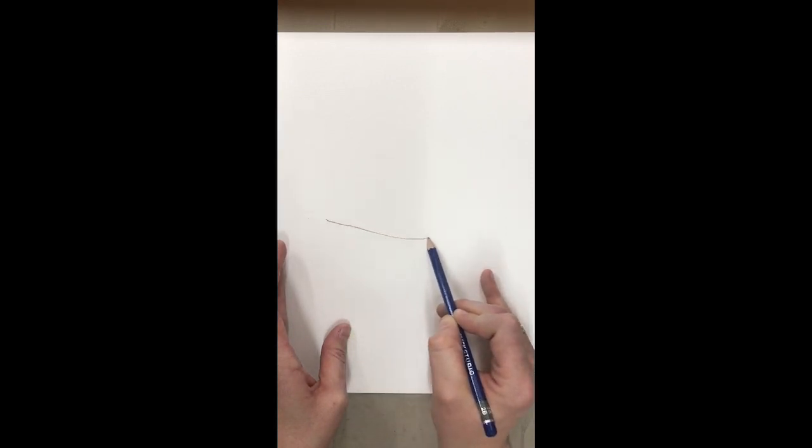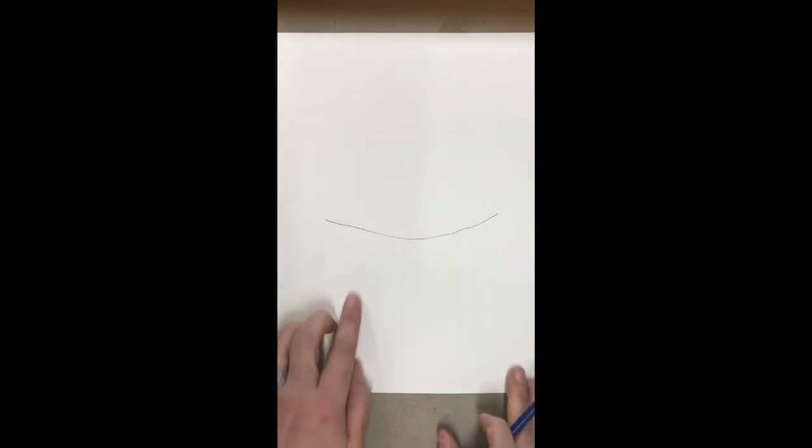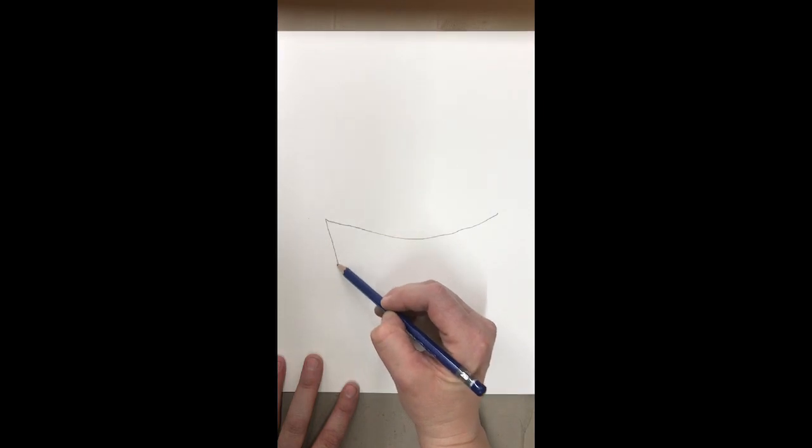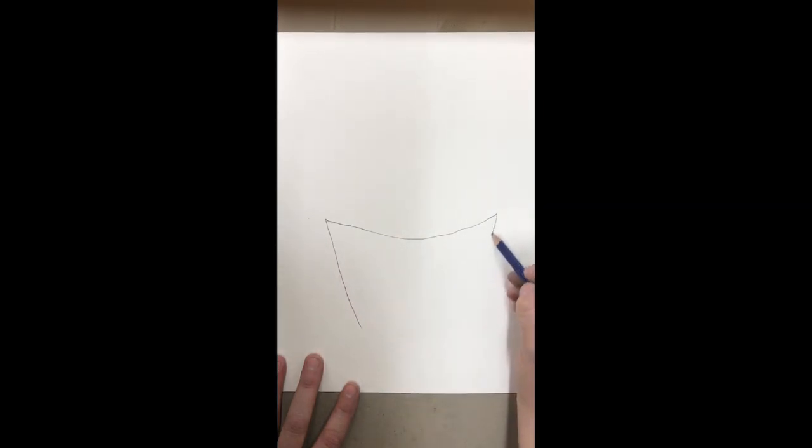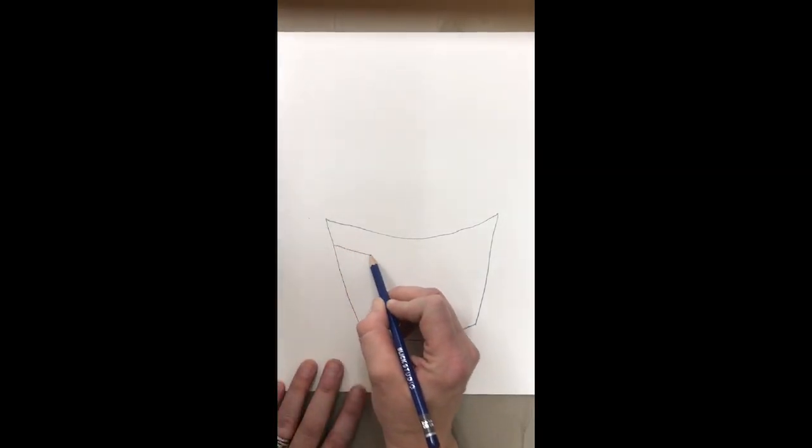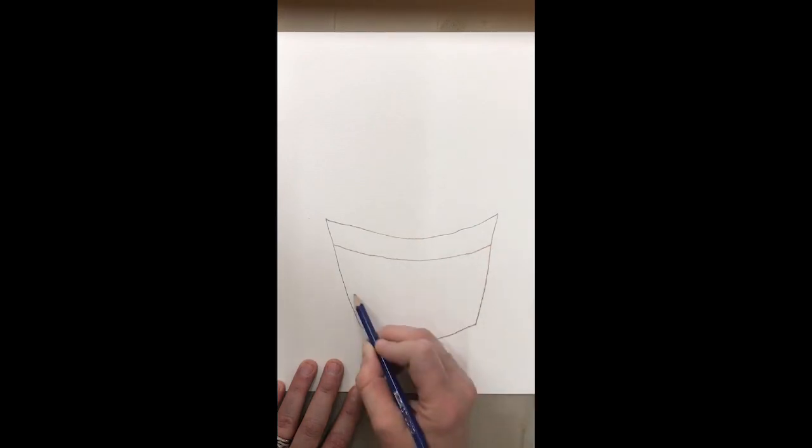To start with I'm going to draw really light, remember, and I'm going to draw the opening of my pot. Then I'm going to come down and I'm gonna get my sides just like that, and then we want to connect those lines. Now yours can be round, square, rectangular, whatever you want. There's no wrong or right answer.